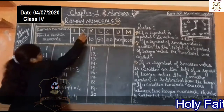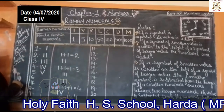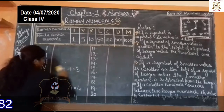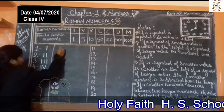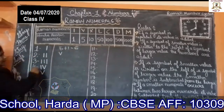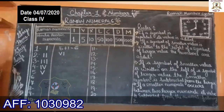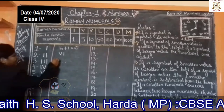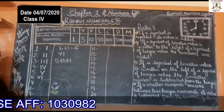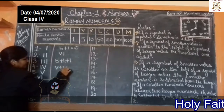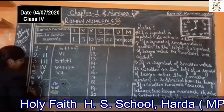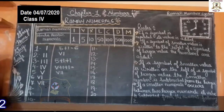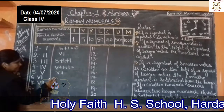Now, five — we already have V. For six, five plus one is equal to six, so we write VI. For seven, five plus one plus one, so we write VII. This is the symbol of seven.